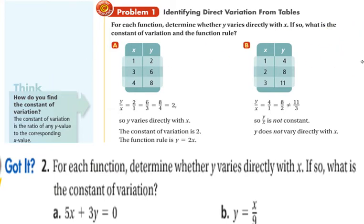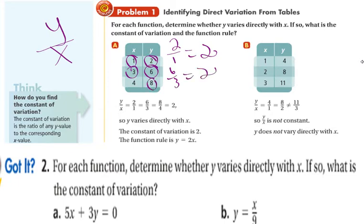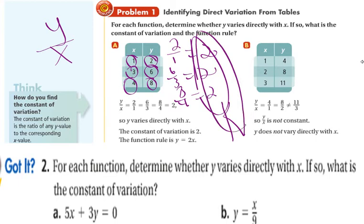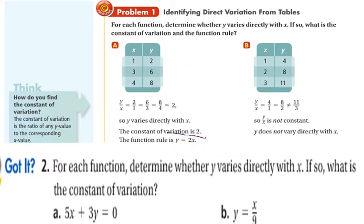So, if we look at how can we tell if something's a direct variation, in the first problem, we have tables. Well, all you have to do is take that ratio. How is this changing? Well, you're going to take y over x and look at how this ratio changes, or maybe it won't change. So, we're going to have 2 over 1, that's equal to 2. And the next one is 6 over 3, that's equal to 2. And 8 over 4, which is also equal to 2. Because these remain constant ratios, this is a direct variation. And my constant variation, my k value, is this 2.